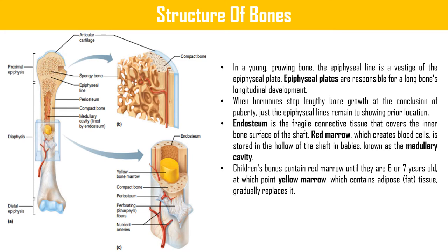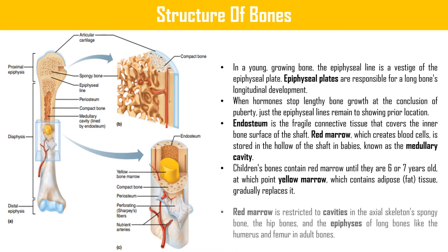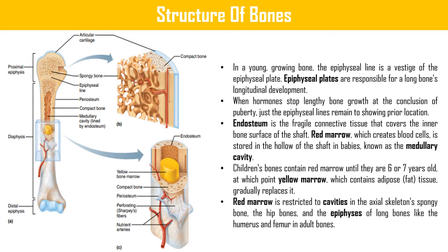The endosteum is a fragile connective tissue that covers the inner bone surface of the shaft. Red marrow, which creates blood cells, is stored in the hollow of the shaft — known as the medullary cavity — in babies. Children's bones contain red marrow until they are six or seven years old, at which point yellow marrow containing adipose fat tissue gradually replaces it. In adults, red marrow is restricted to cavities in the axial skeleton, spongy bone, the hip bones, and the epiphyses of long bones like the humerus and femur.